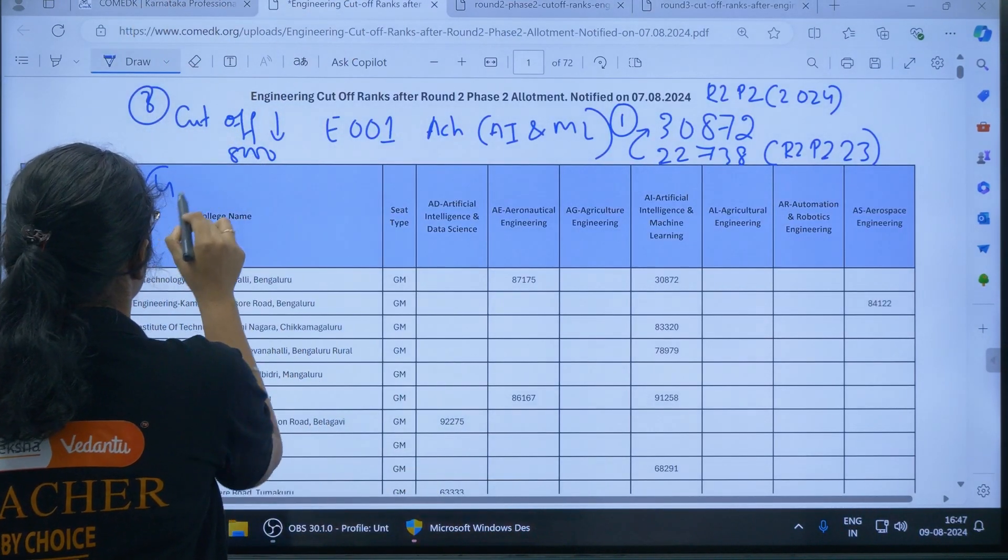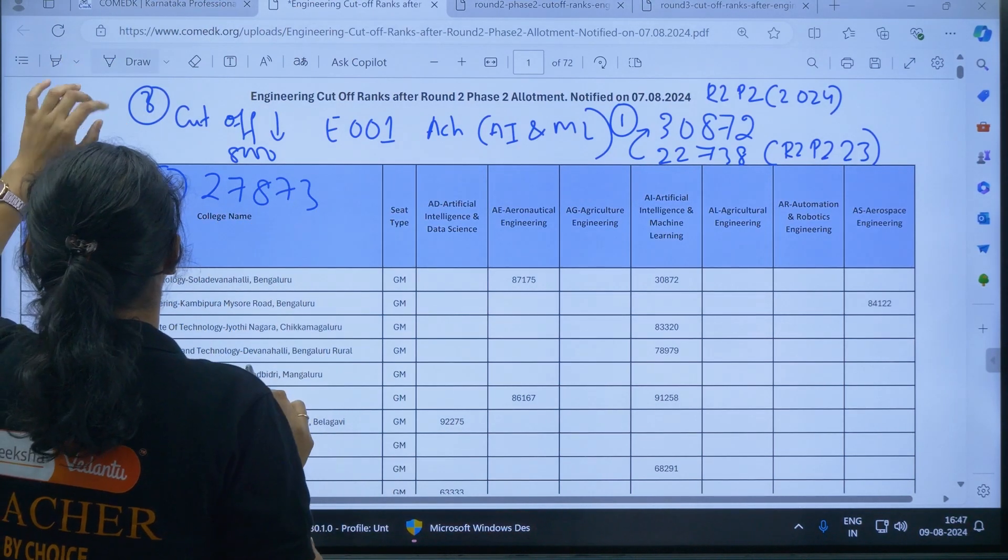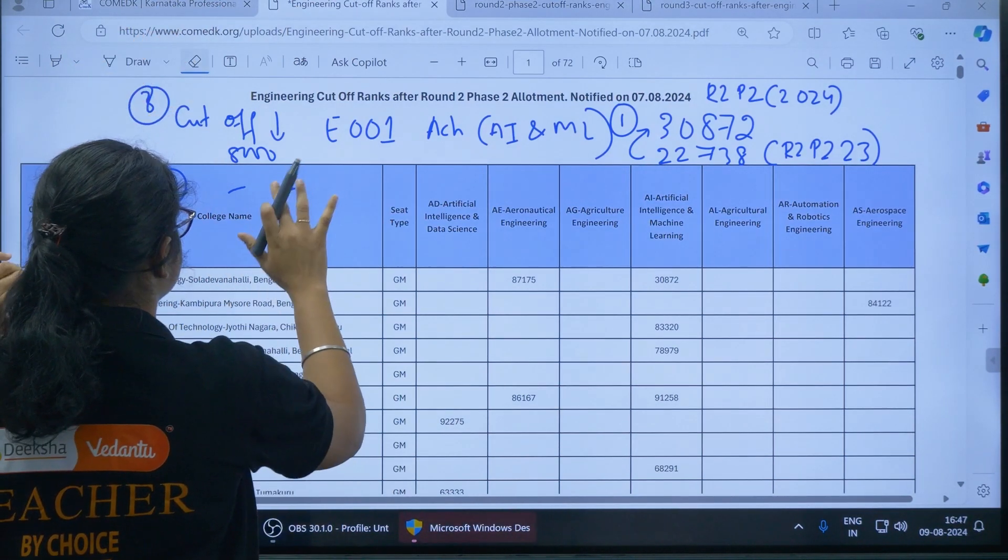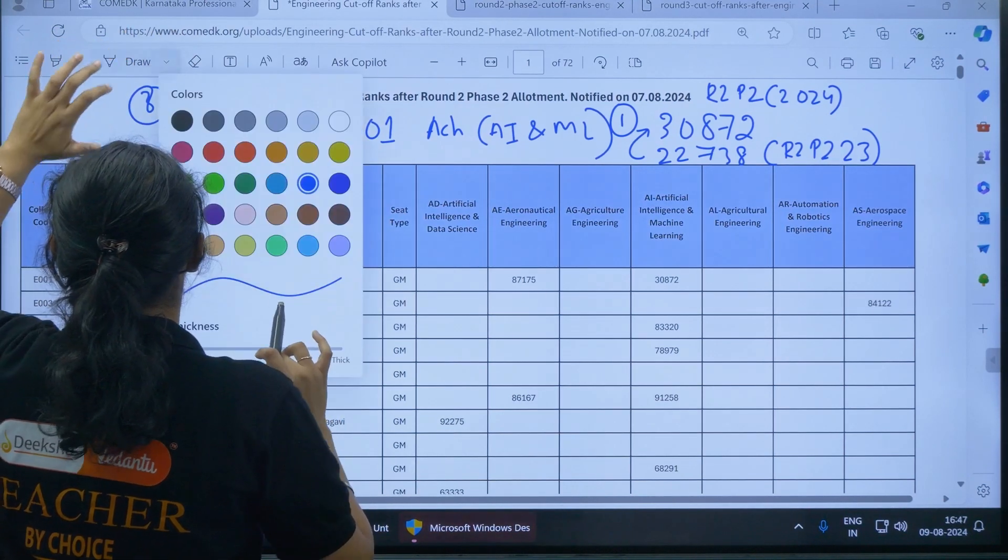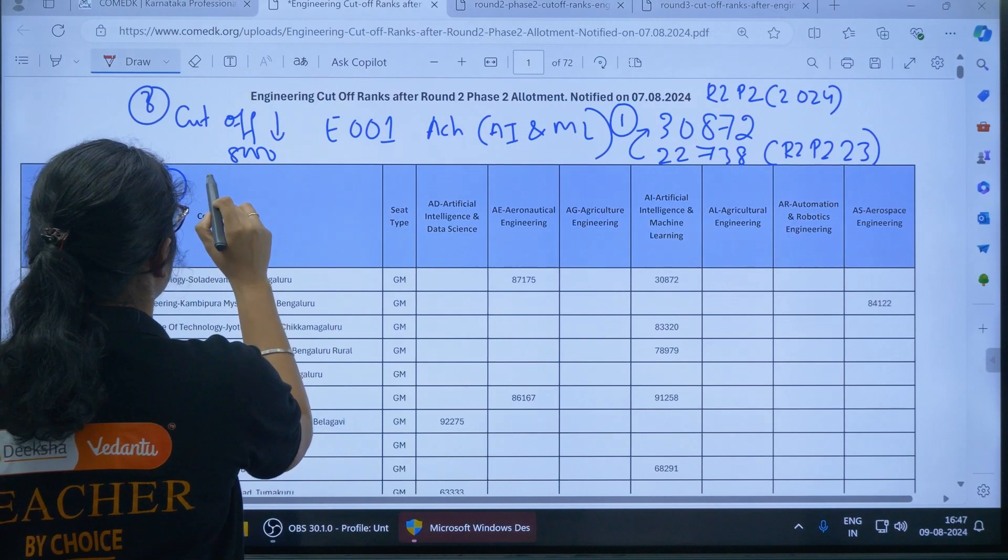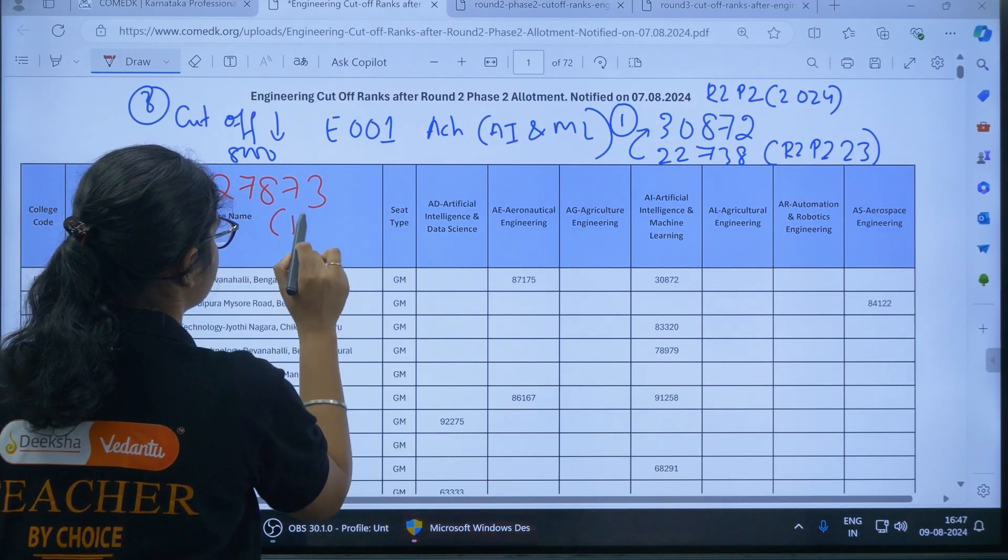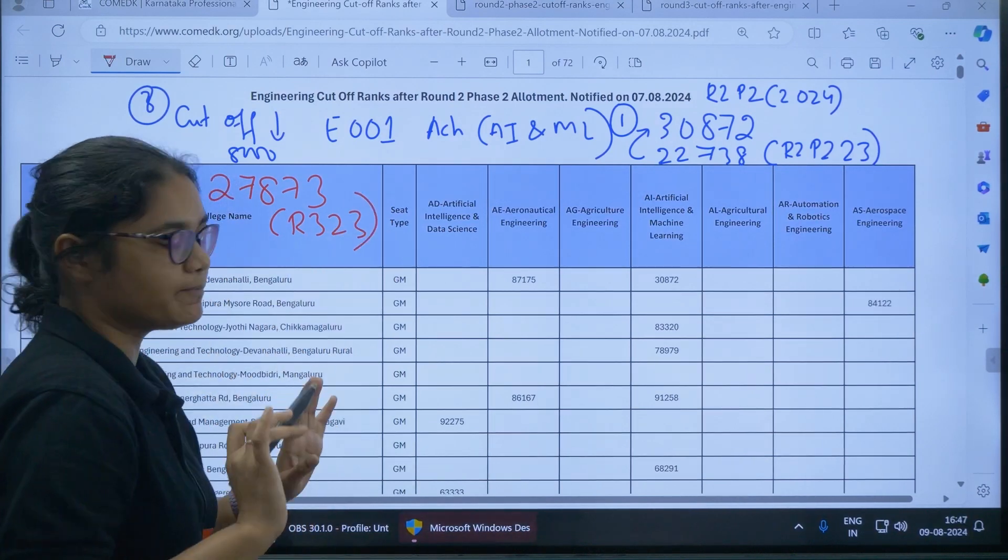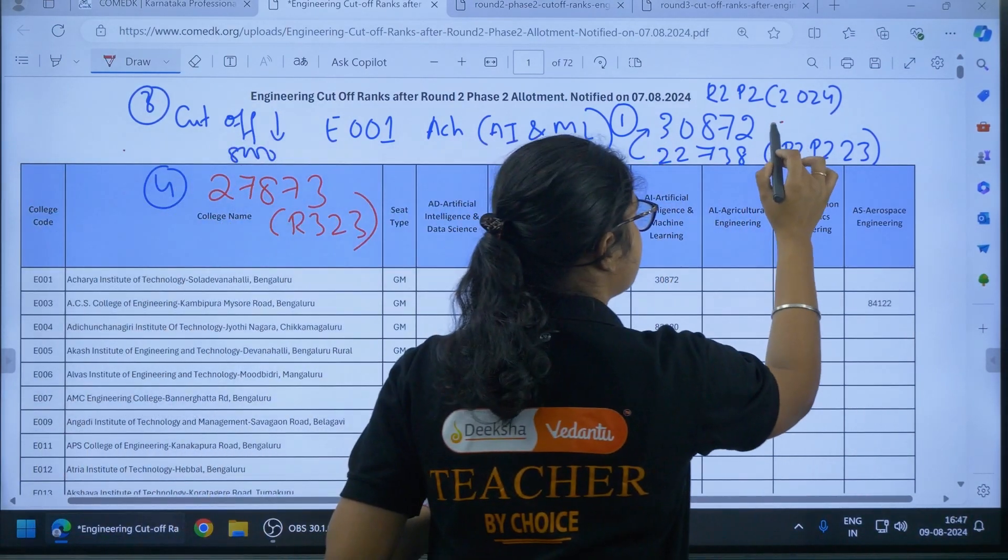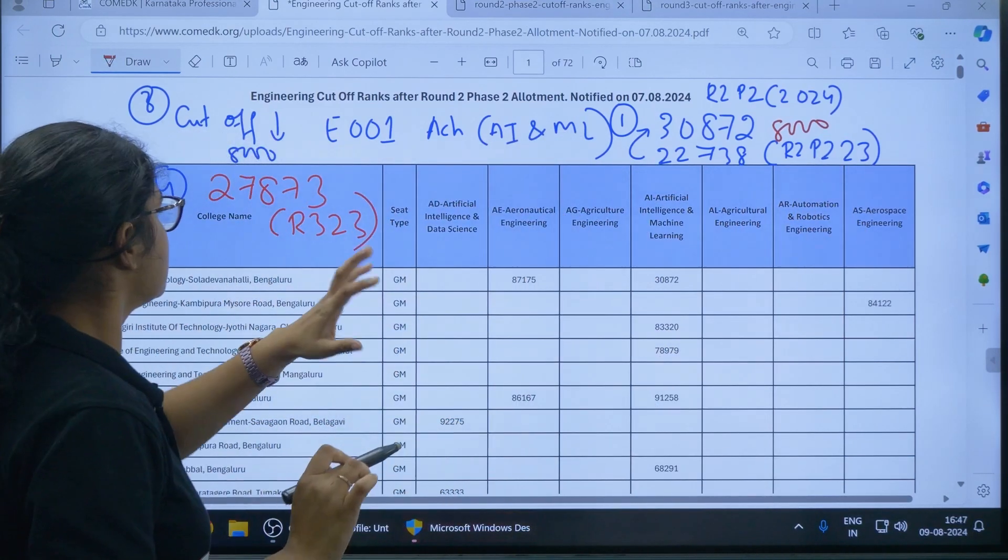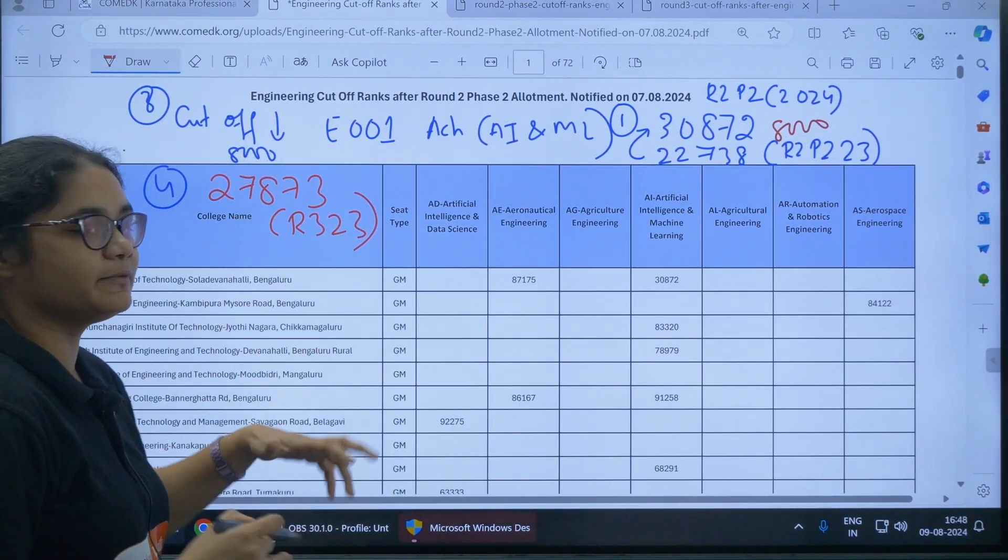So we can come back to our place. So here, 27,873. I will use red pen here. 27,873, this is Round 3 2023 cutoff. So now what we can expect here is the increase was around how much? 8,000. 8,000 increment was there. So the same thing we can increase, somewhere around 8 to 10,000 the increase will be here in this year.